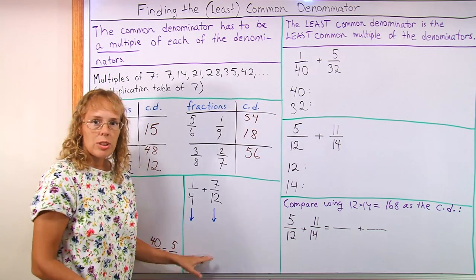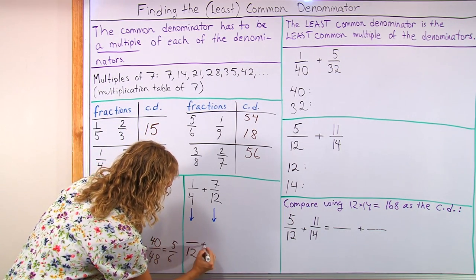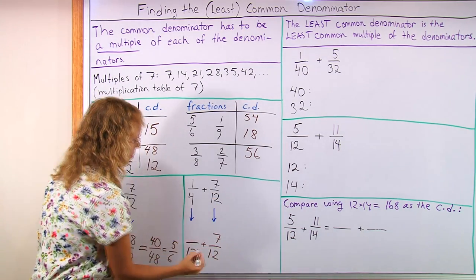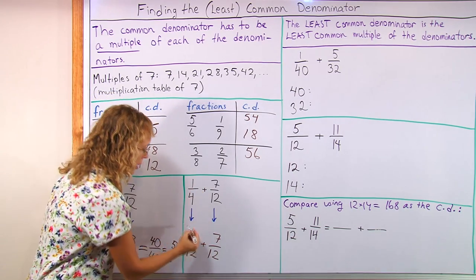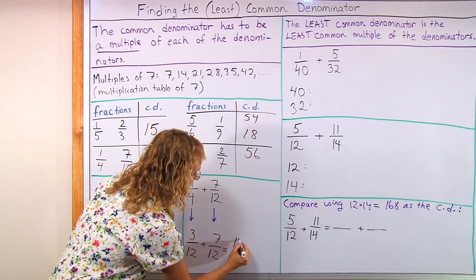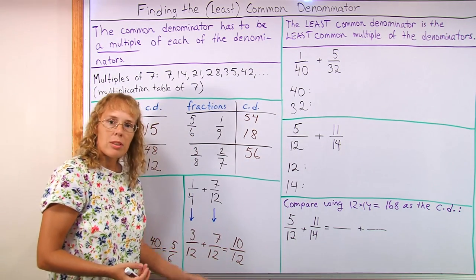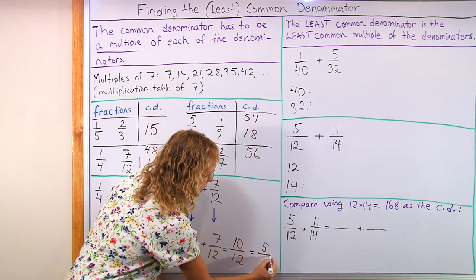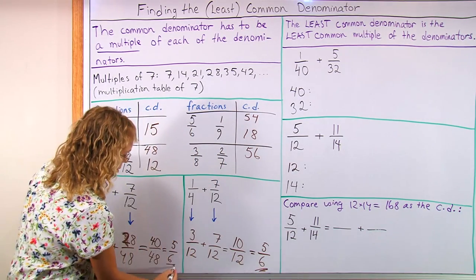Now let's add using the other common denominator, 12. 7/12, of course, doesn't change. And here, 4 goes to 12, 3 times, so I go 1 times 3, 3. And I get 10 over 12. This also can be simplified because both of these are even numbers, divisible by 2. So I can divide 10 by 2 and 12 by 2 and get 6. So the final answer is the same, right? As we expected.